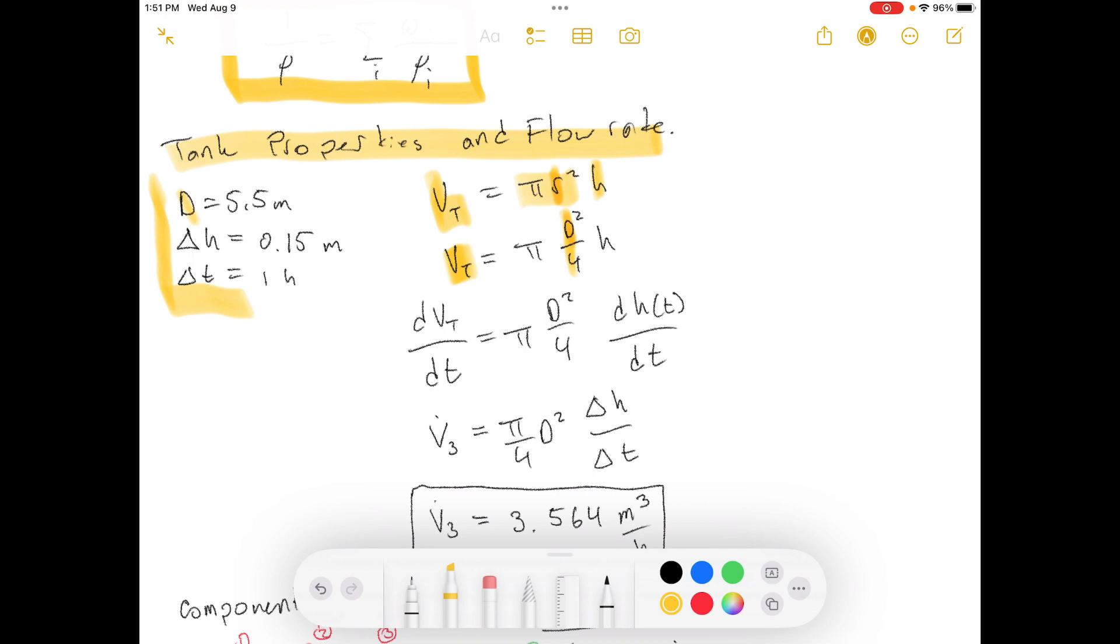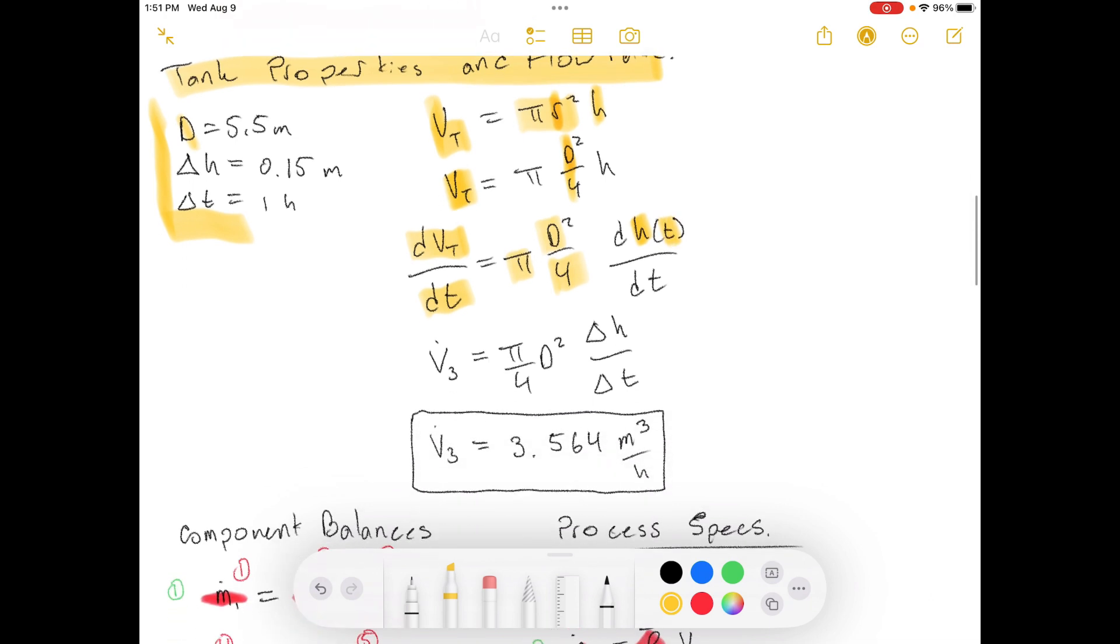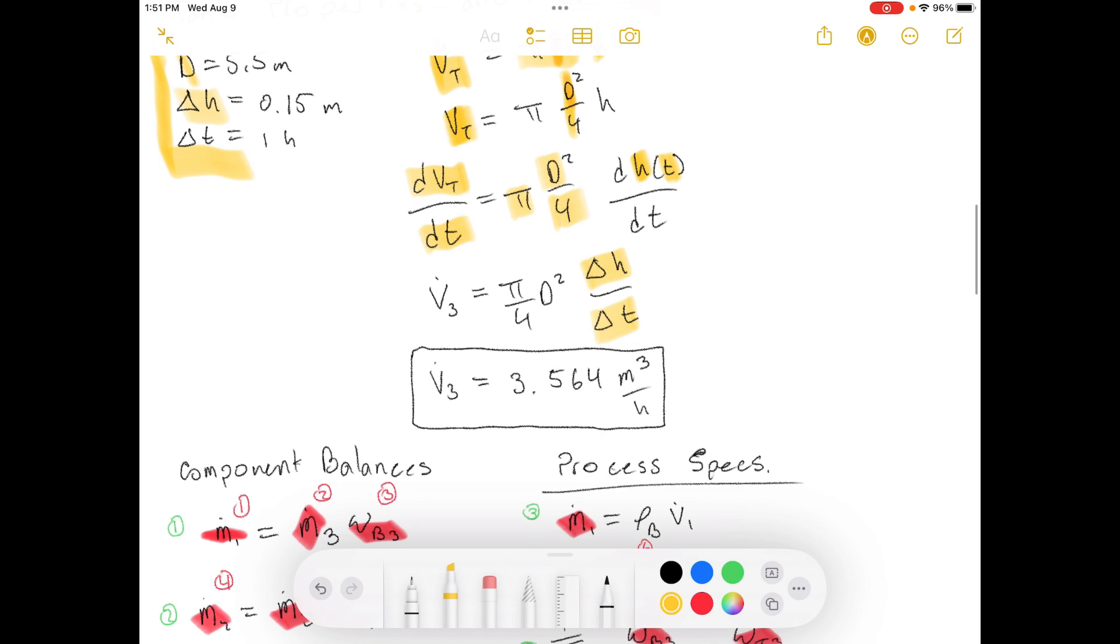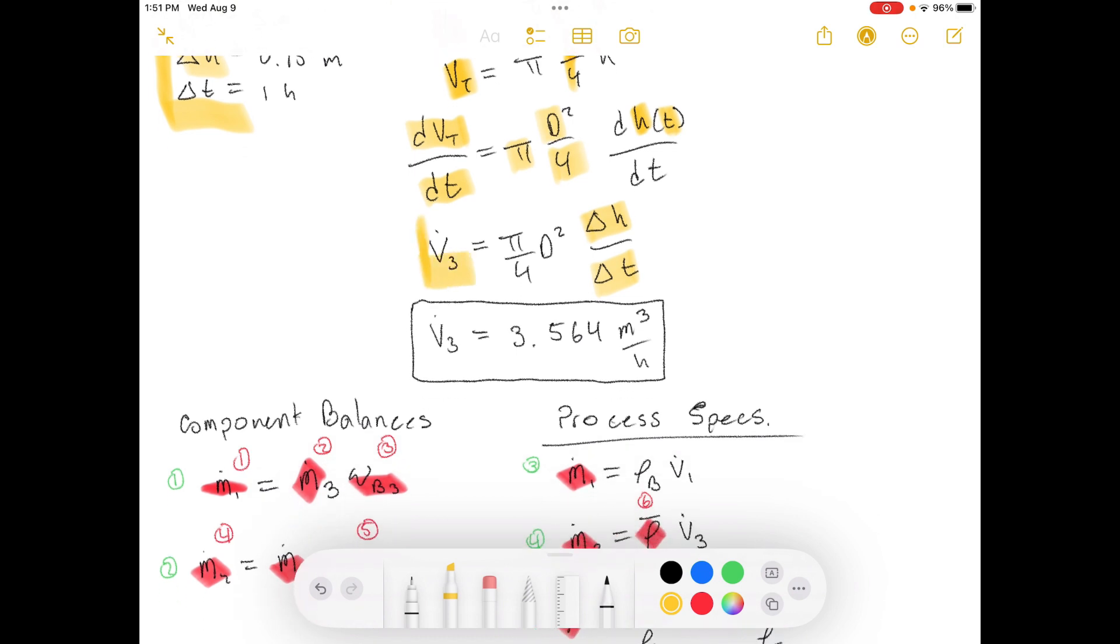Now, I'm going to take the derivative of the volume of the tank with respect to time. So, the derivative of the volume of the tank with respect to time equals pi, which is a constant. The diameter is a constant. And 4 is a constant. So, we pull all those out. And then, h, it does change with time, right? They gave us what that change in time was in delta h. That's a change in time. And then, this is how much it changed in time. So, this estimates what the volumetric flow rate is into the tank.